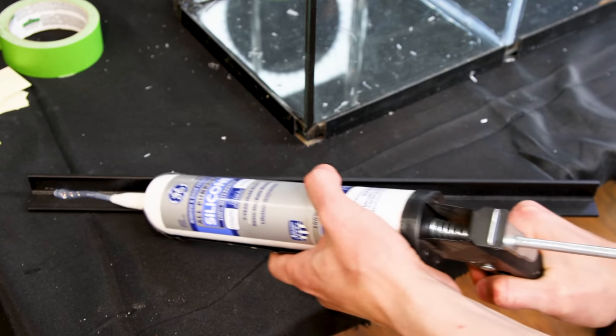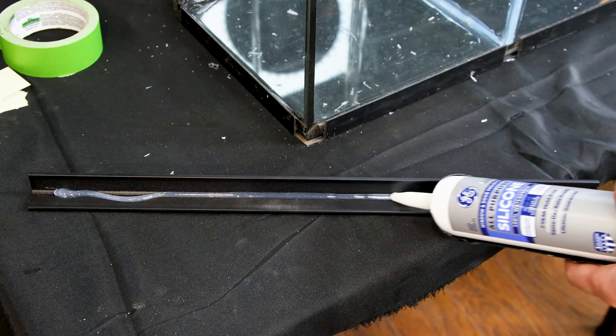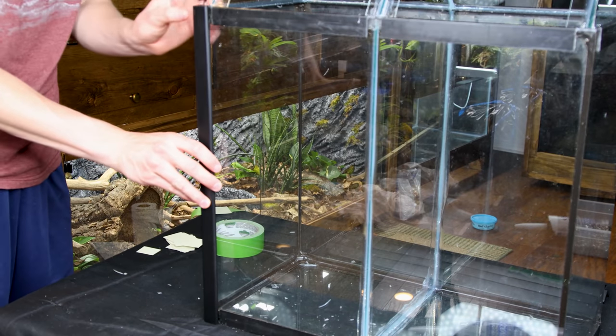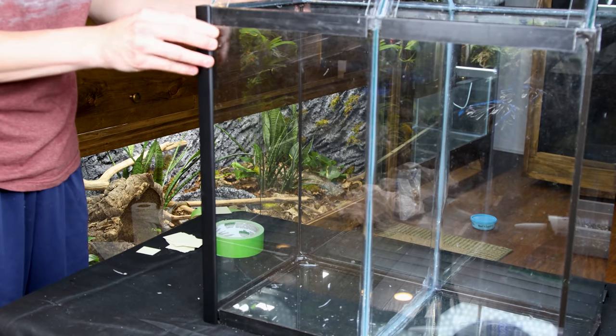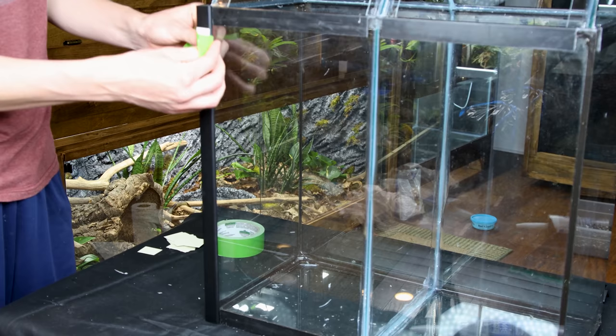After the paint dried, I went on to secure them to the tank. I applied silicone and pressed them onto the glass. I taped them down while the silicone cured.